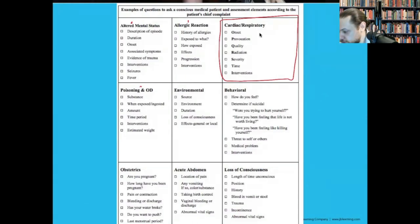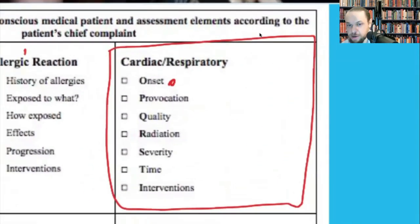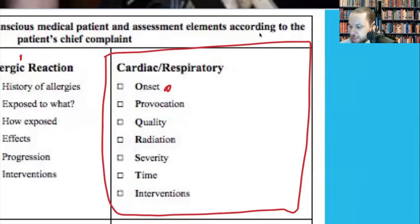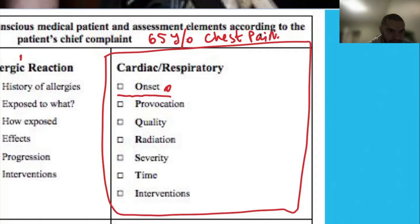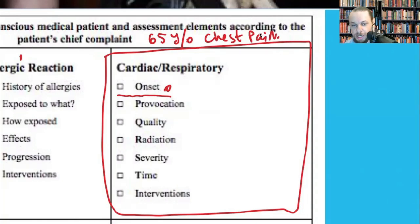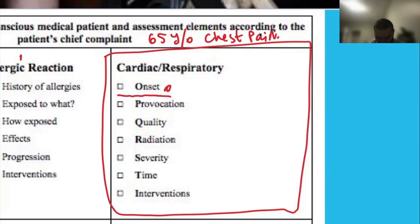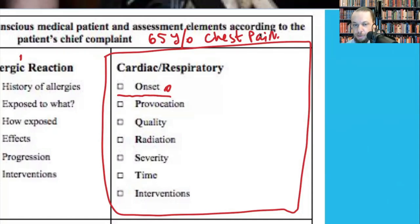Let's go through OPQRST for a 65-year-old male with chest pain. Onset: when did the pain start, and what were you doing when the pain began? The patient might say he was stacking boxes — physical activity — or shoveling snow, or he might say he was just sitting watching television — brought on at rest. Provocation: does anything you do make it better or worse?